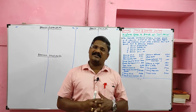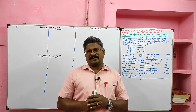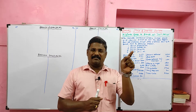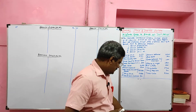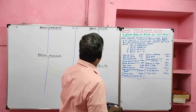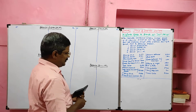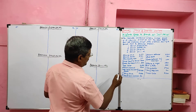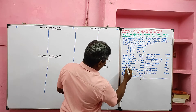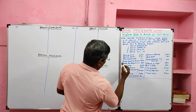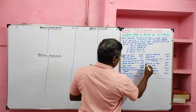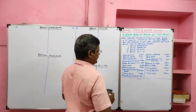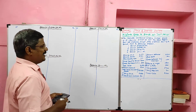First, I am going to prepare the Branch Expenses Account. Expenses are of two types: one is cash expenses and another is non-cash expenses. For cash expenses, on the debit side we will write 'To Bank.' The cash expenses here are advertisement, salary and wages, and rent and rates — these three are considered to be cash expenses.